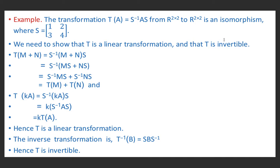First we will show that T is a linear transformation. For this we will show that it preserves addition. T(M + N) = S⁻¹(M + N)S. In the given definition we replace A by M + N. Because S, M, N, and S⁻¹ are all 2×2 matrices, we can add and multiply them in the usual way. So (M + N)S = MS + NS, and S⁻¹(MS + NS) = S⁻¹MS + S⁻¹NS.